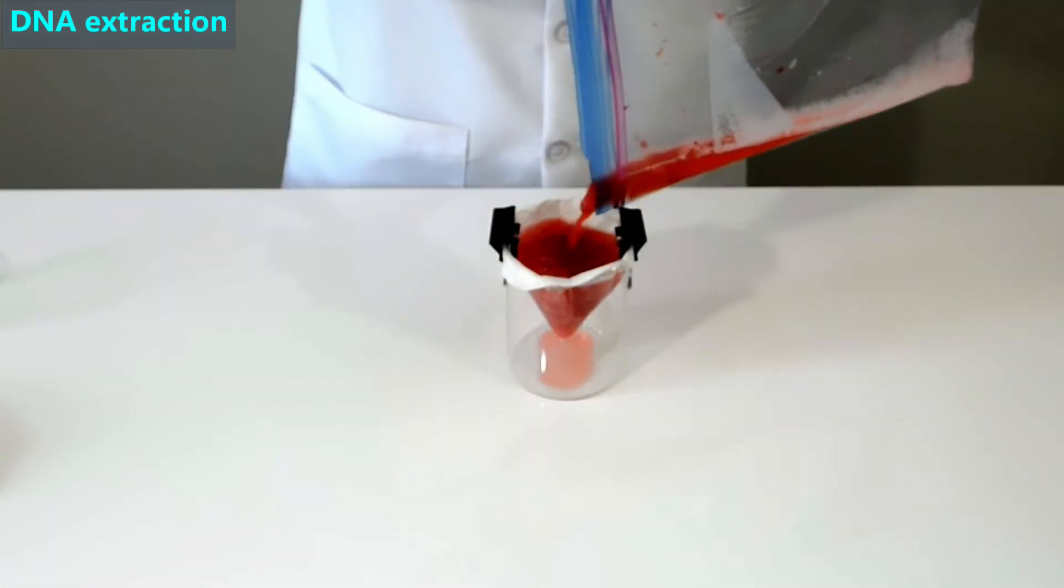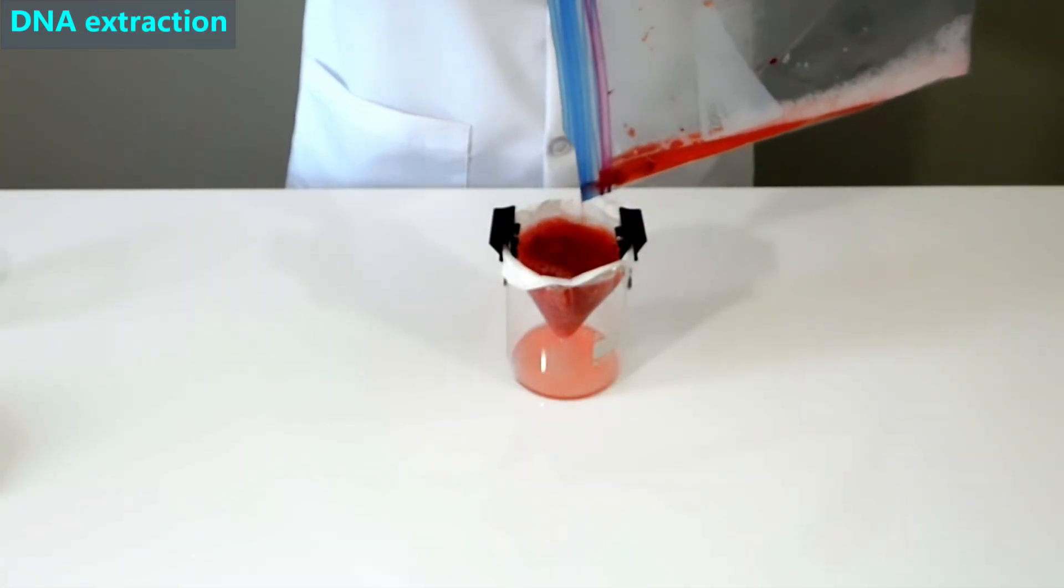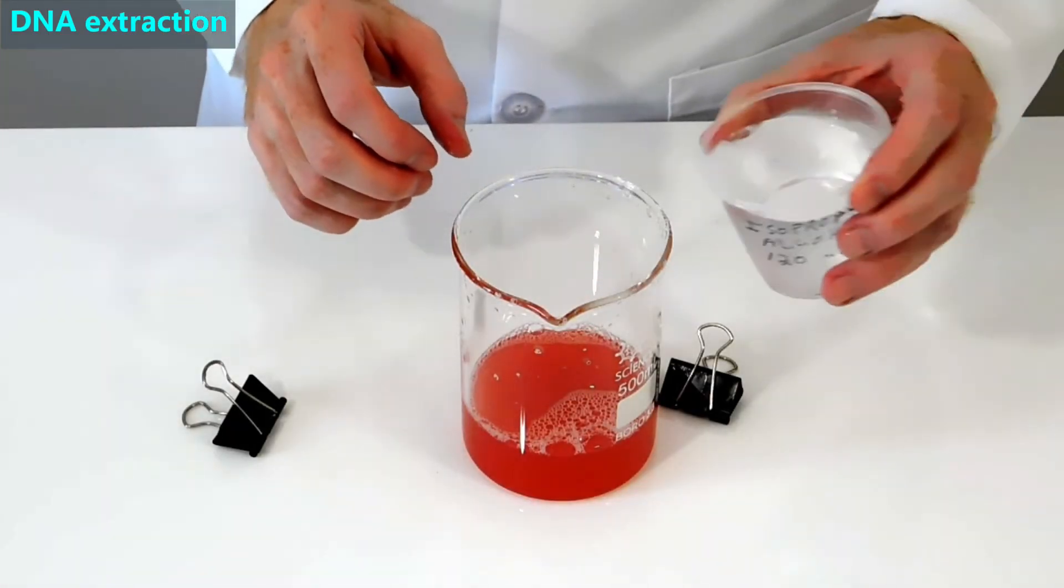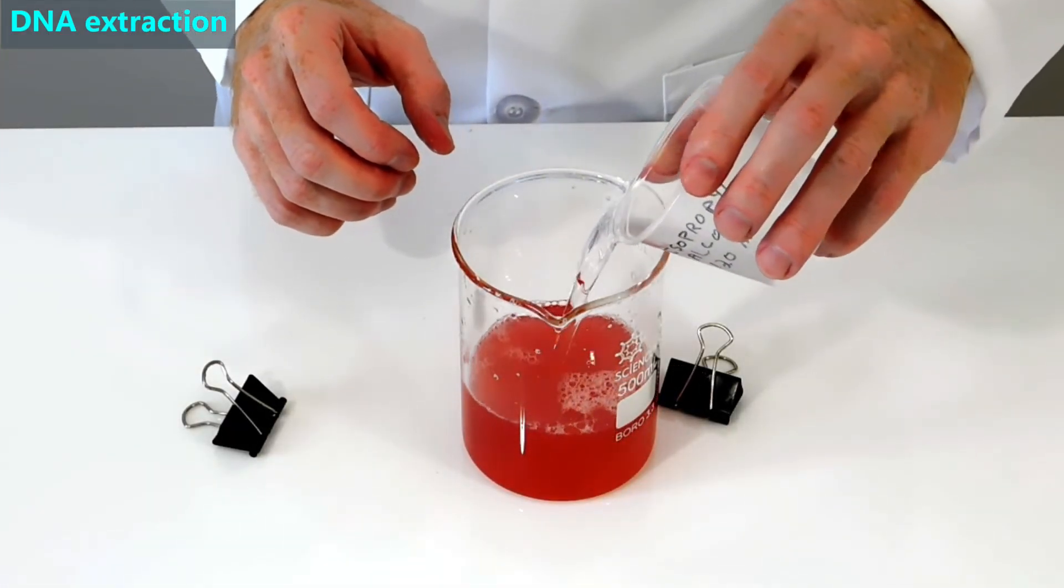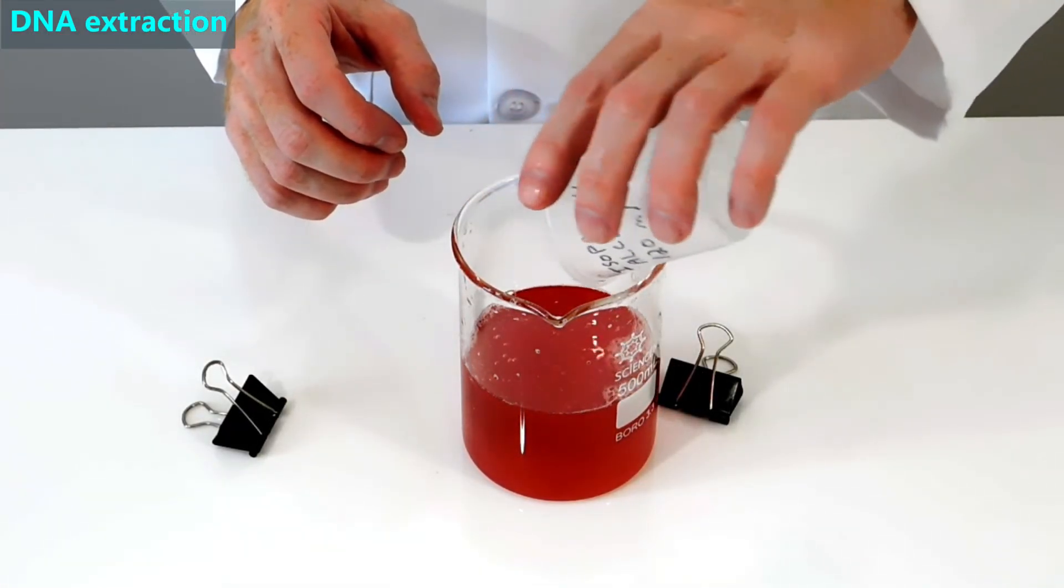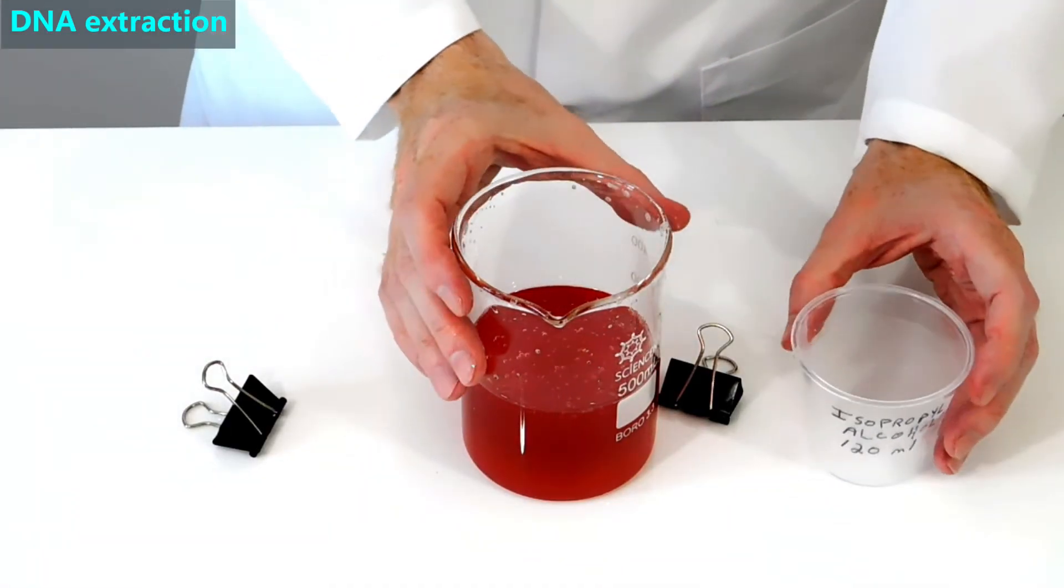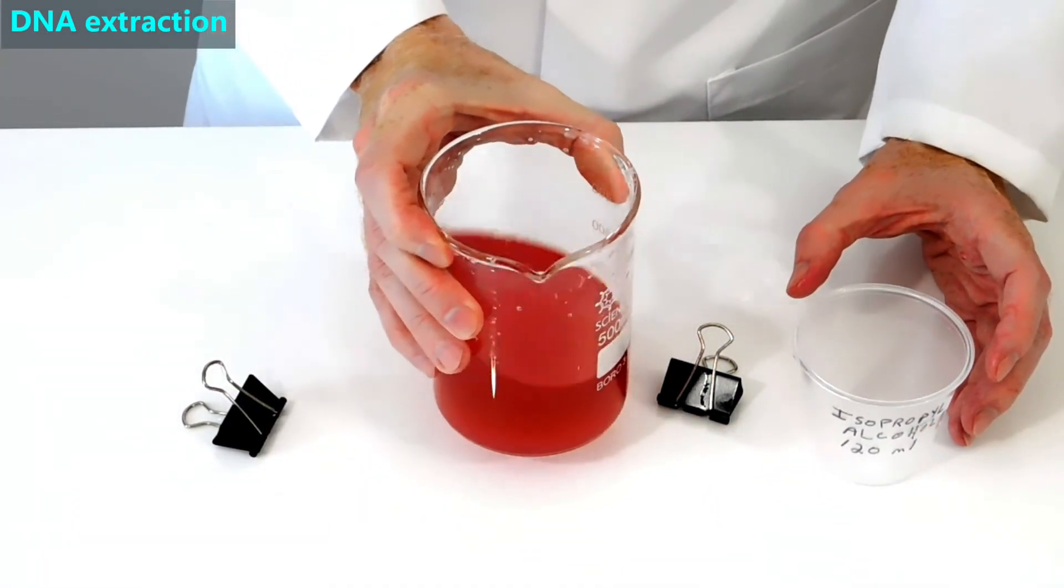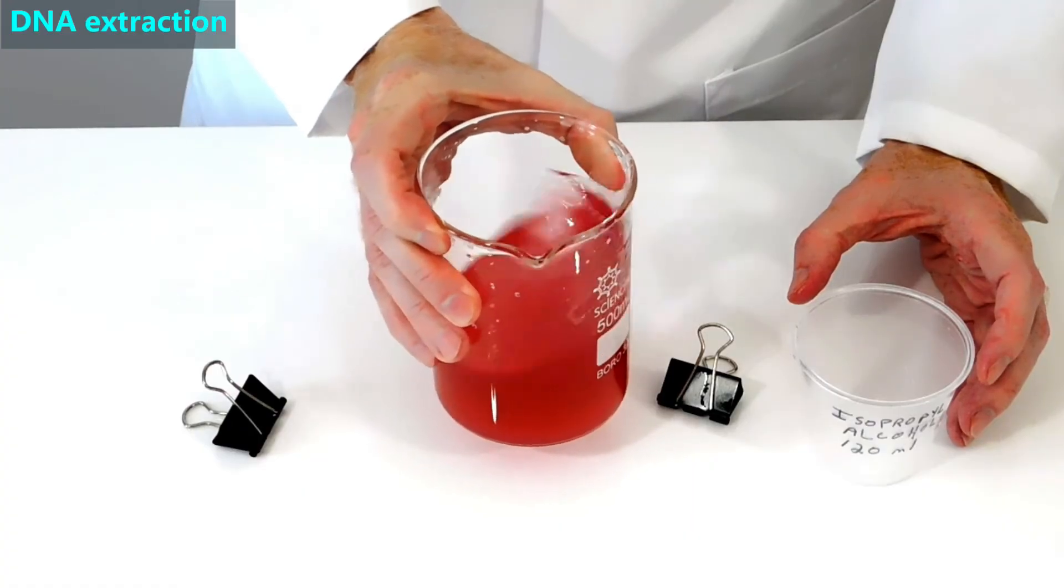Next, we pour this mixture into a coffee filter and wait for the liquid to drip through. Then we add 120 ml of cold isopropyl alcohol, commonly called rubbing alcohol, to the filtered solution. Almost immediately, a white solid forms on the top of this liquid.